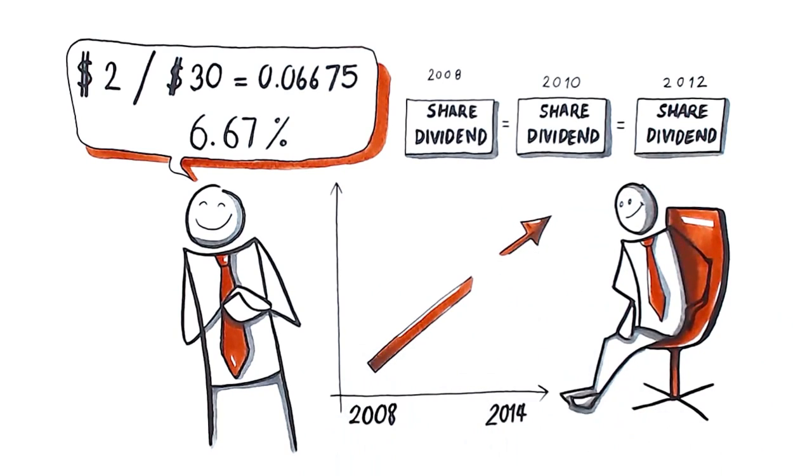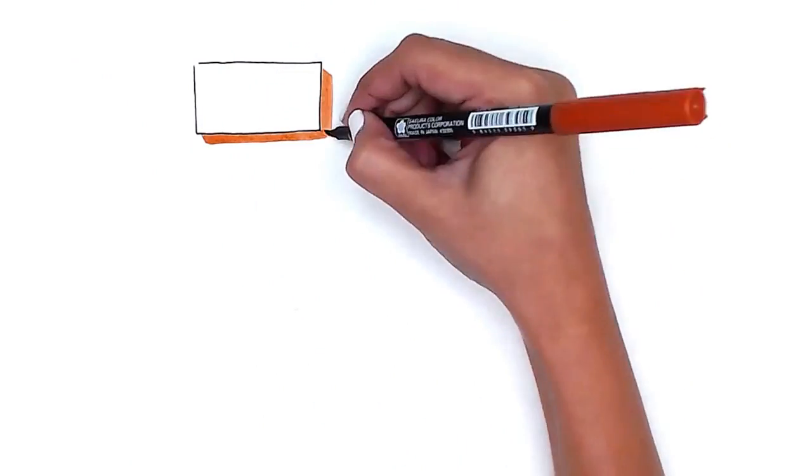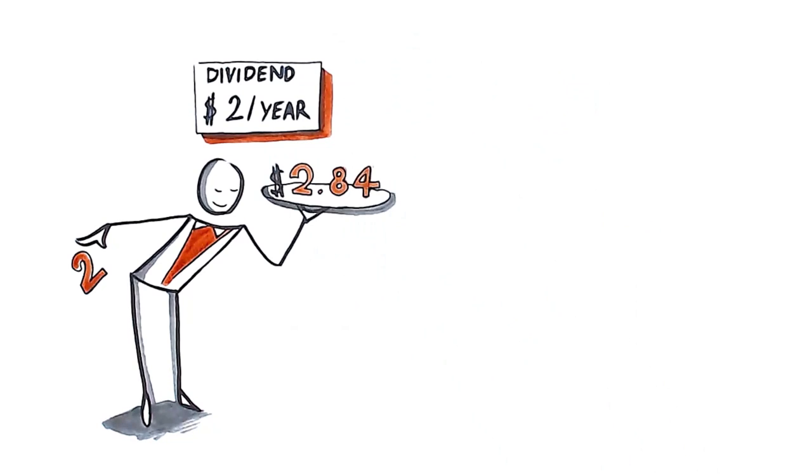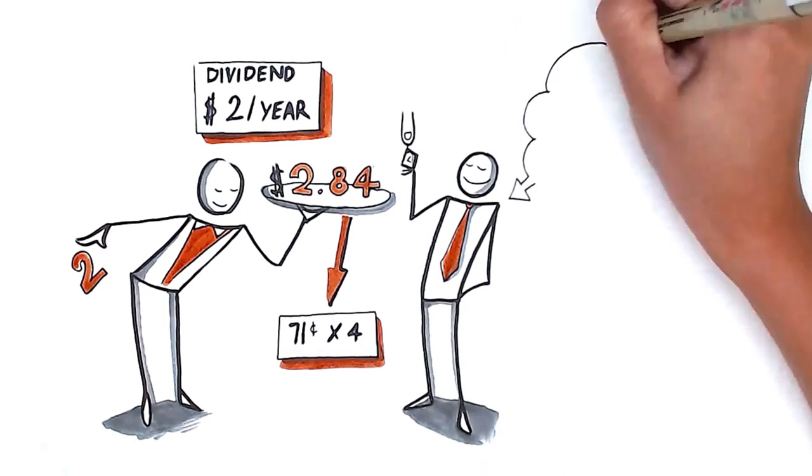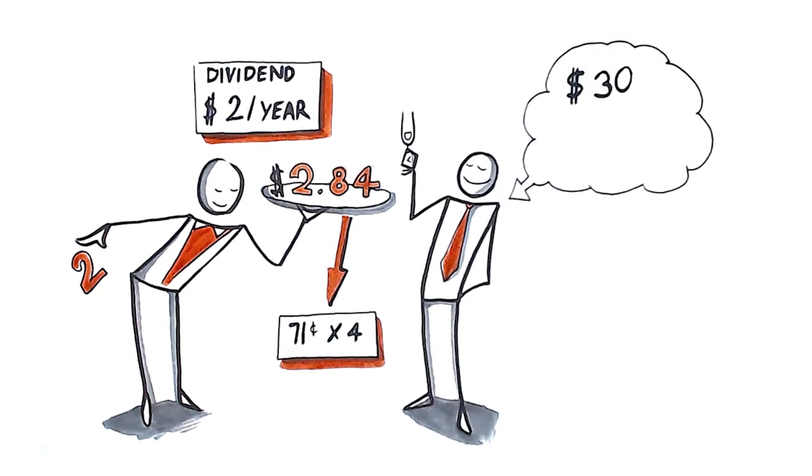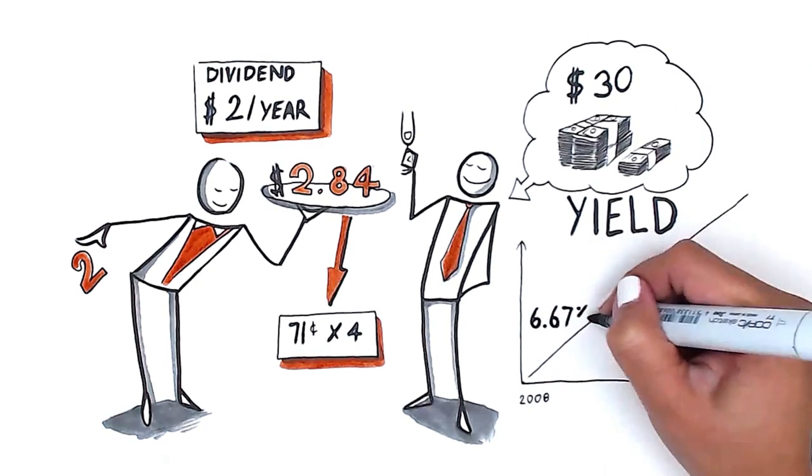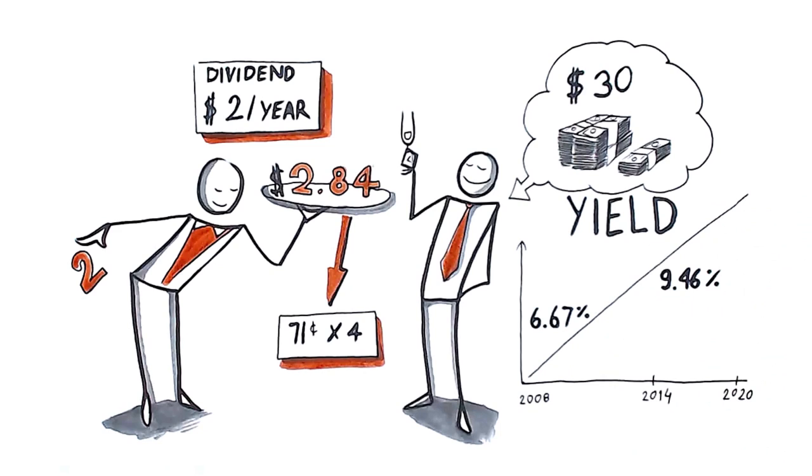By early 2014, this company's dividend has increased to $0.71 per share. Our $2 per year dividend is now $2.84. For the investor who bought the right to this cash flow for $30, your yield on cost has increased from 6.67% to 9.46%.